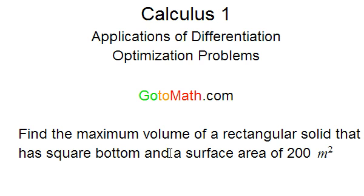In this particular one, we're going to be finding the maximum volume of a rectangular solid that has a square bottom and a surface area of 200 meters squared. Actually what we're going to be doing is just finding the dimensions. We're not going to actually find the volume, but we want to maximize the volume. We're just going to find the dimensions of this rectangular solid. So let's get started.